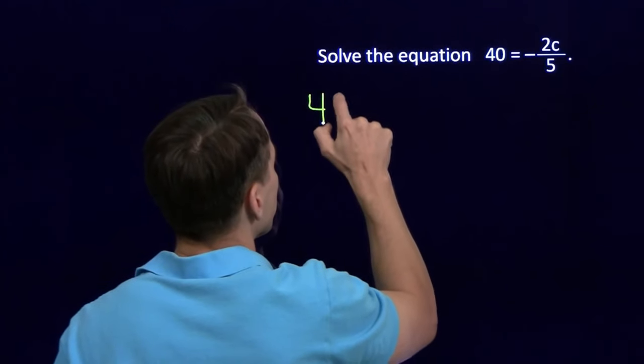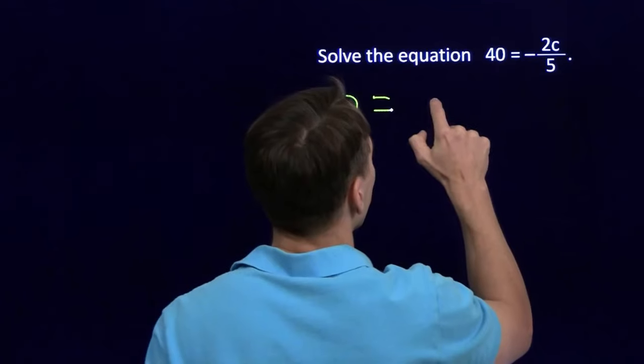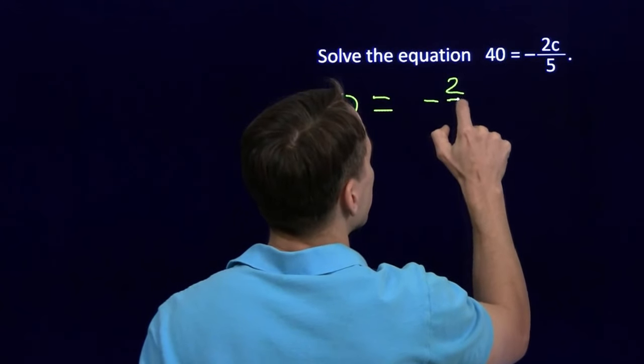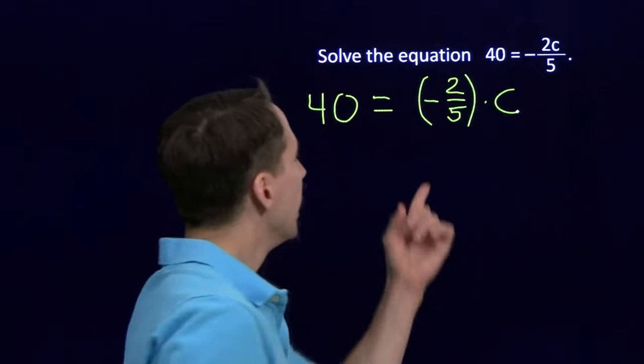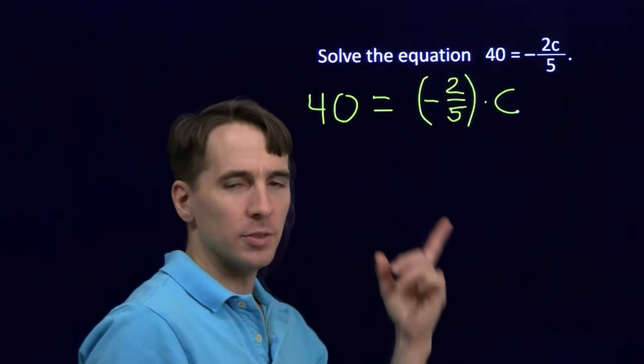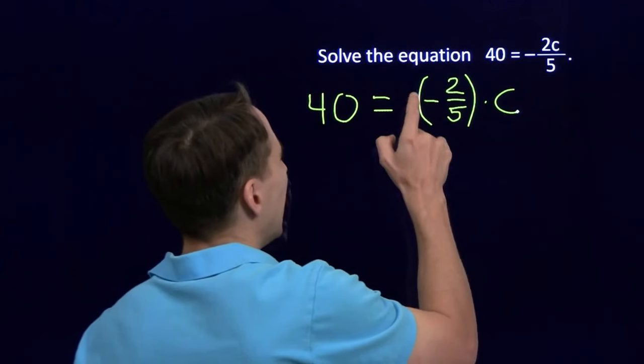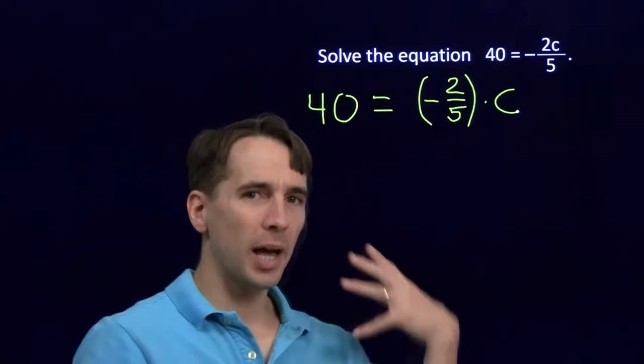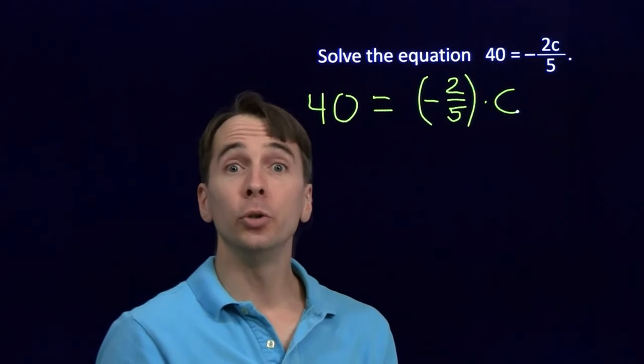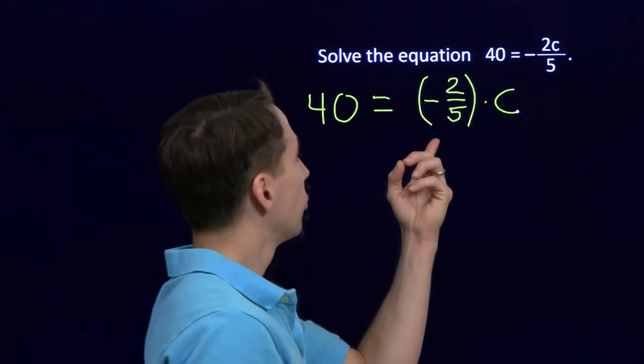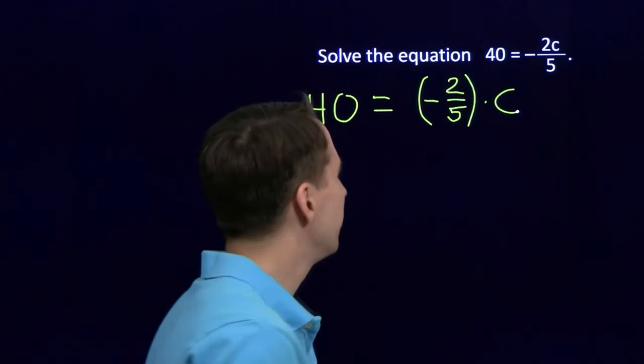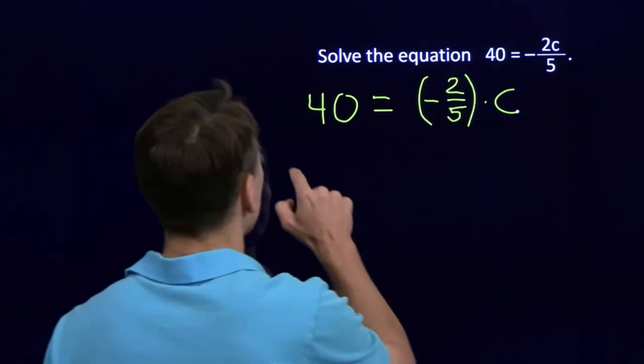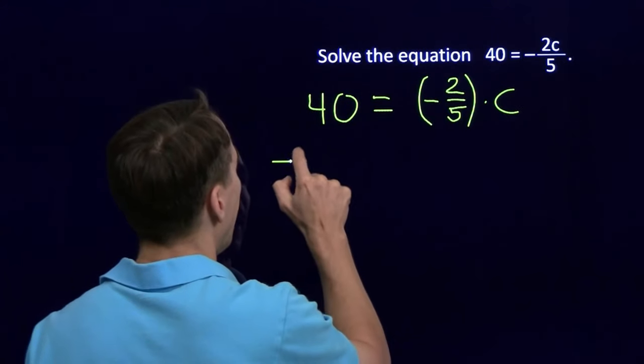Another way to think about this equation is 40 equals negative 2 fifths times c. And we want to cancel out this negative 2 fifths. Now, if you take a number and you multiply it by its reciprocal, you get 1. So what I want to do here is I want to multiply by the reciprocal of negative 2 fifths. That's very clever. The reciprocal of negative 2 fifths is negative 5 halves.